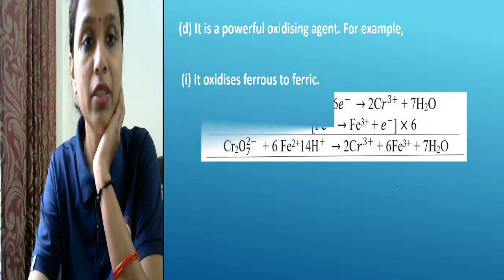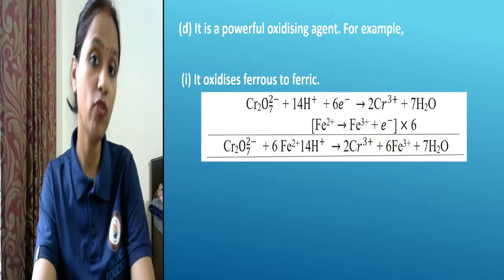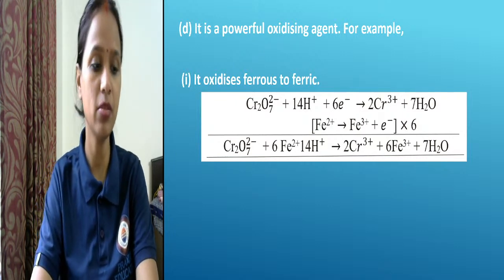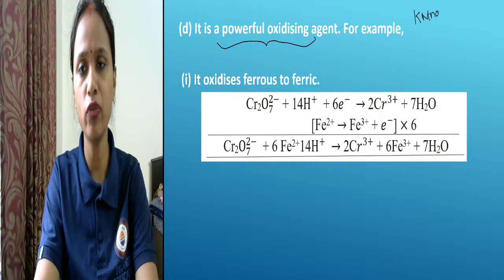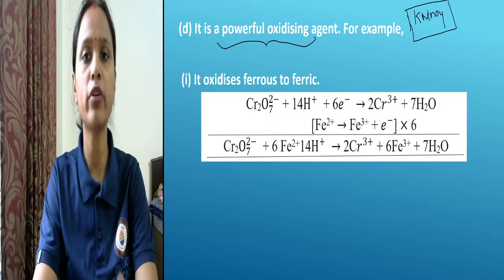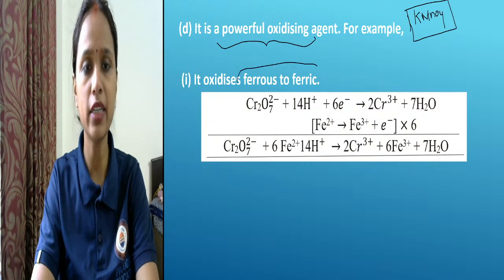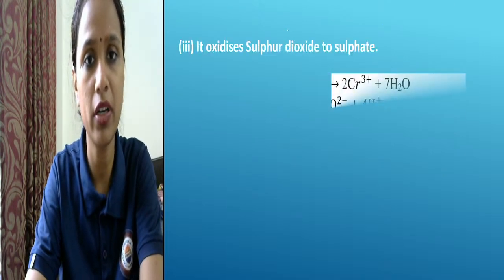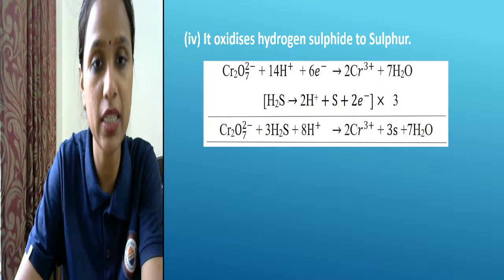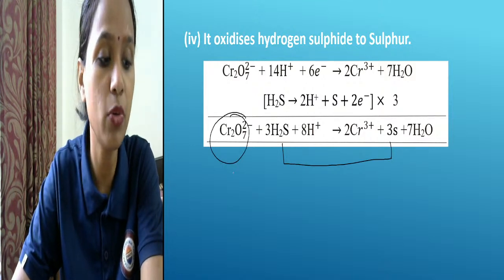Dichromate acts as a very powerful oxidizing agent — we have seen those reactions. Now let's see our next topic: potassium permanganate, KMnO₄. KMnO₄ is also a powerful oxidizing agent. This powerful oxidizing agent can oxidize reactions such as ferrous to ferric conversion.